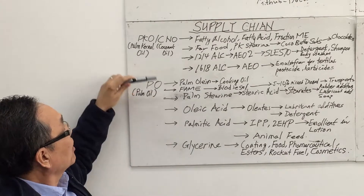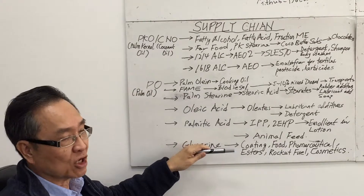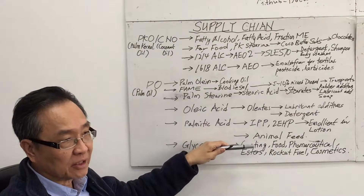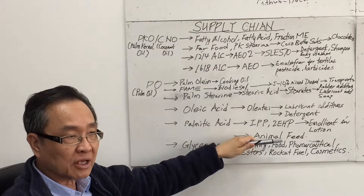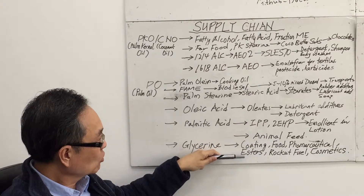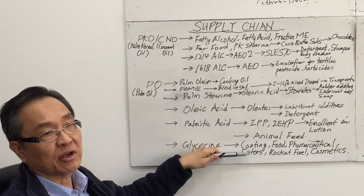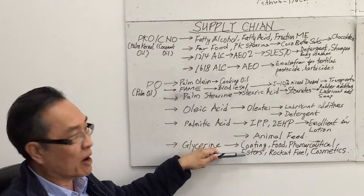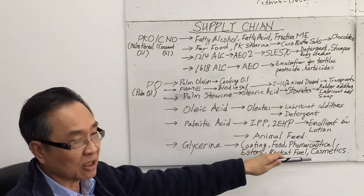Lastly, glycerine — a byproduct of palm oil and palm kernel oil — is used tremendously as a very important commodity. It is used in making coatings, as a sweetener coating in food such as biscuits, and in pharmaceuticals as an insulin material. Glycerine can also be used for making esters and glycerides as an oil substitute for cosmetic products, and as a rocket fuel ingredient.